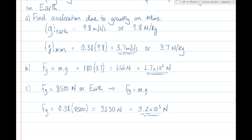The basic idea is: whatever the value is on the Earth's surface, if we multiply that by 0.38 — which is 38% as a decimal — we're going to get the correct values for the surface of Mars, whether we're talking about acceleration or weight. Force of gravity is the same thing as weight.